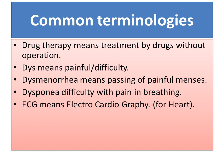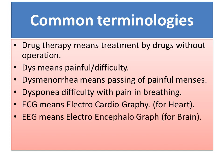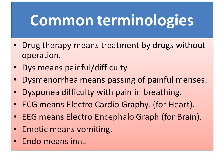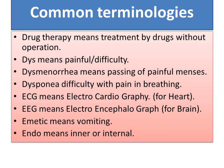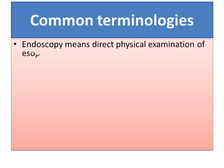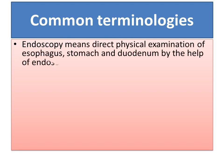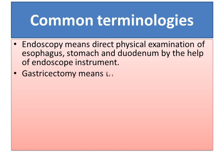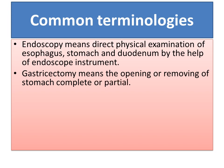ECG means electrocardiography, which we use for heart problems or heart diseases. EEG means electroencephalography, which we use in diseases of the brain. Emetic means vomiting. Endo means inner or internal. Endoscopy means direct physical examination of the esophagus, stomach, and duodenum by the help of an endoscope instrument. Gastrectomy means the opening or removal of the stomach, complete or partial.